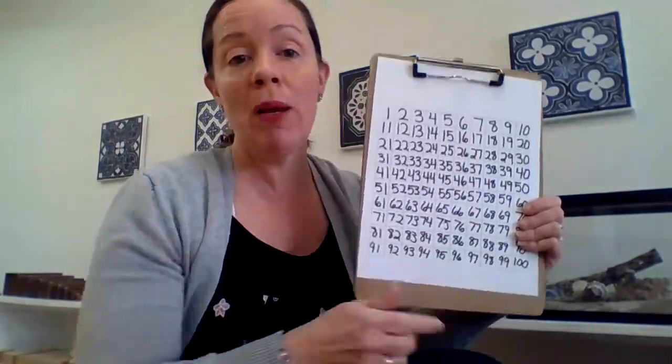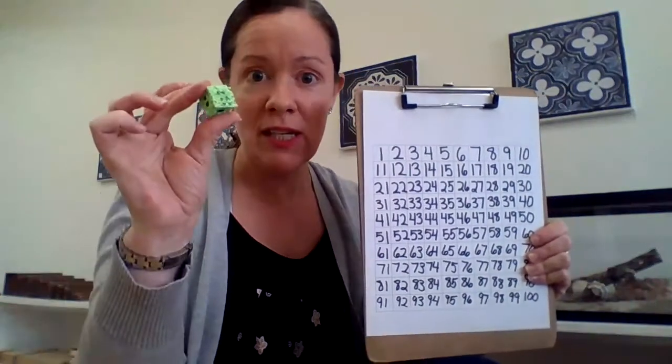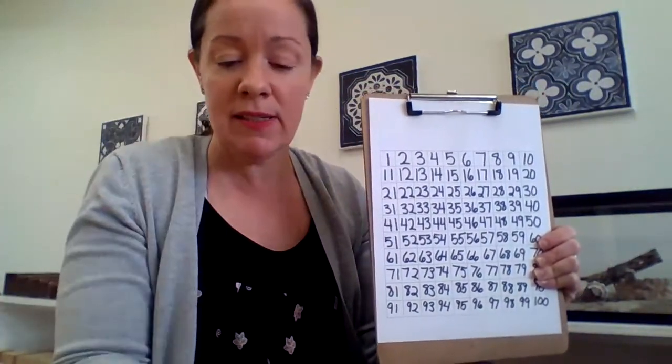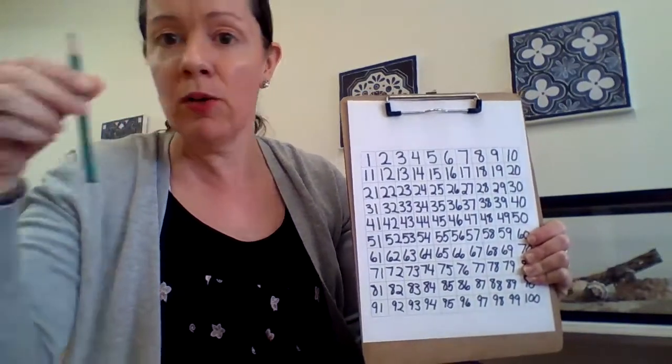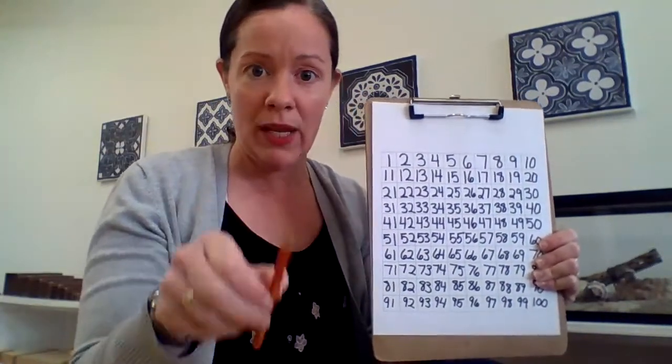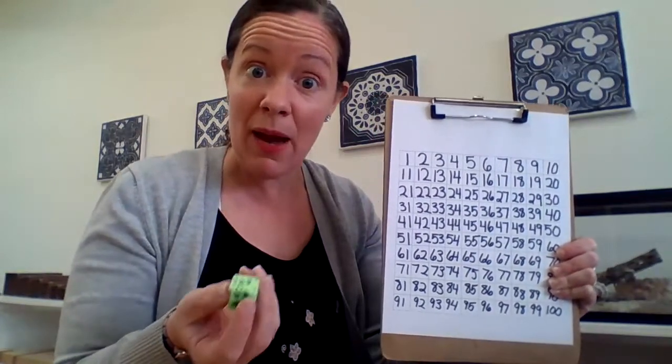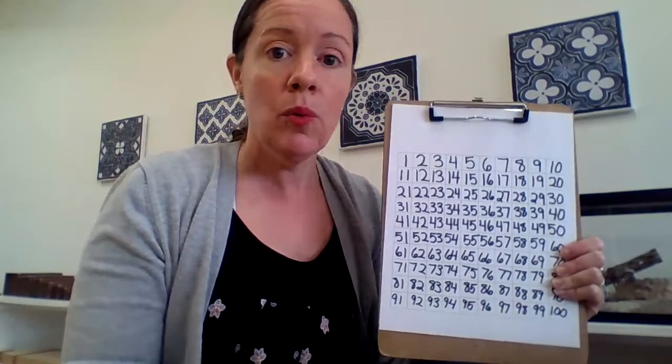So let me show you a fun game that you can play. Remember the die that you had? So if you want to play this game with a partner, you're going to need your die and then two colored pencils. I have a green and an orange and I'm going to roll my die and then I'm going to color in that many squares while I count them. So let's see.